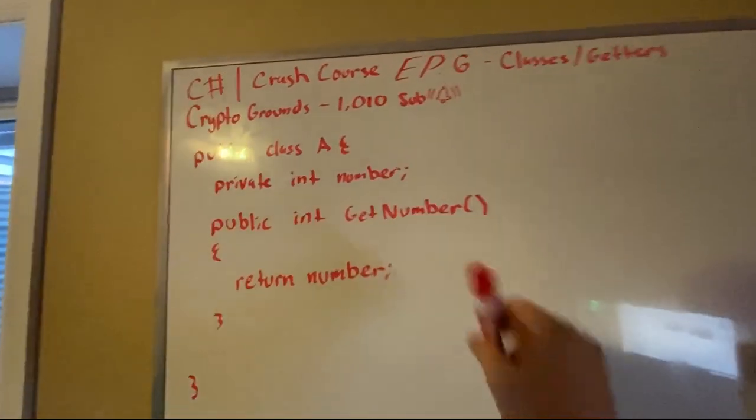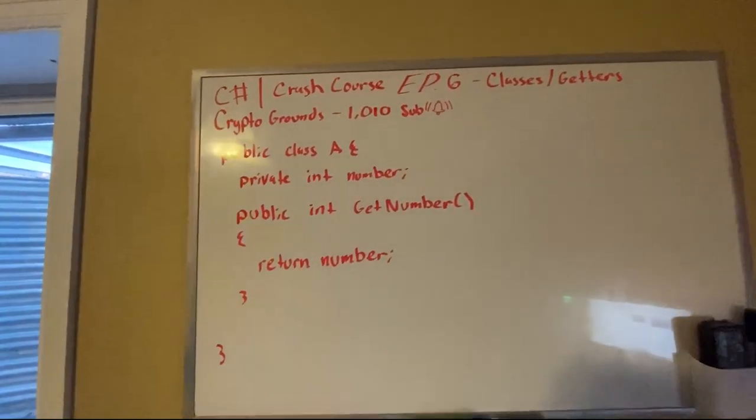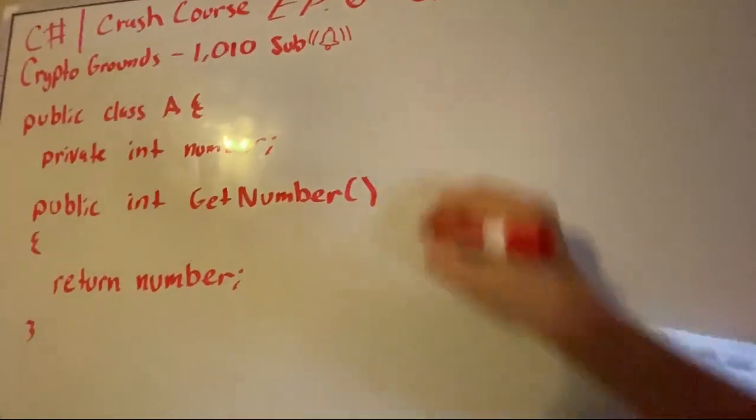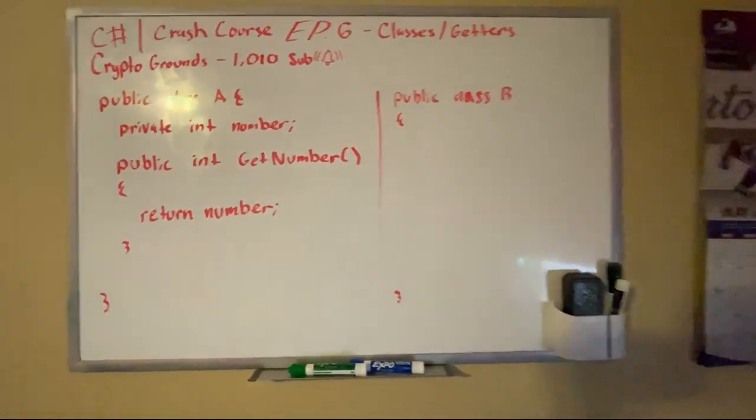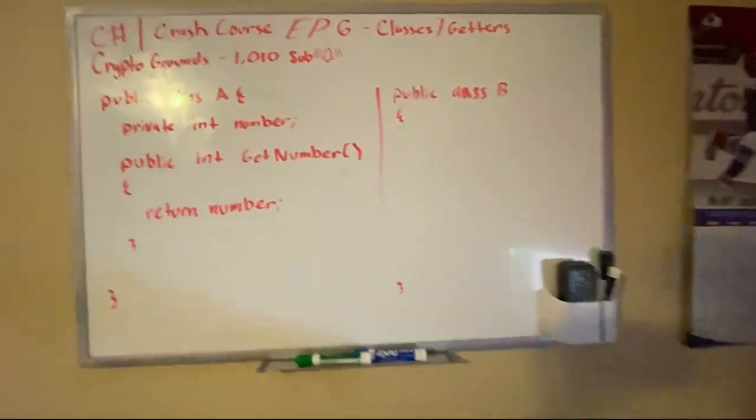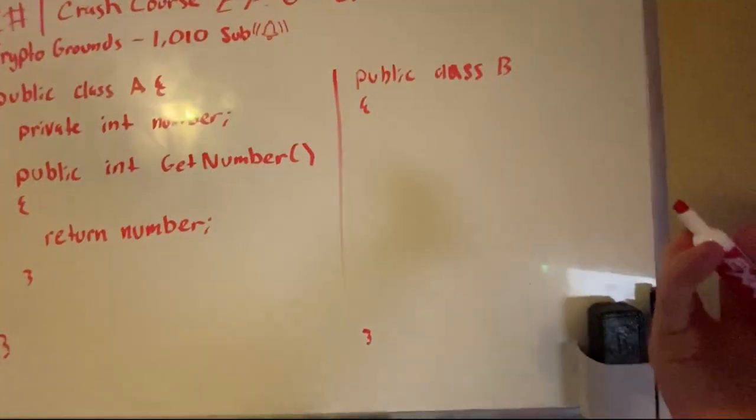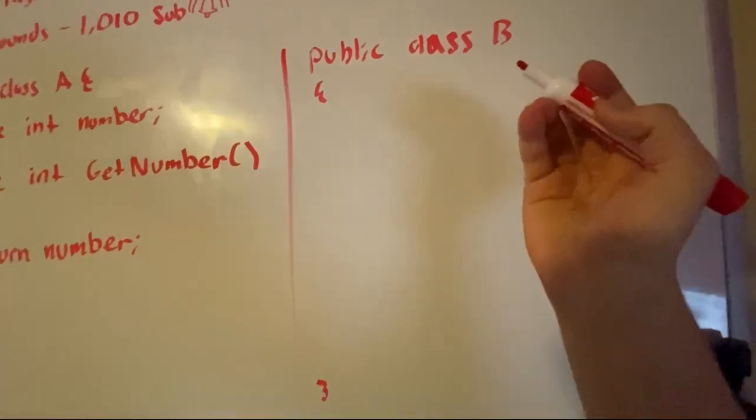So we do public int GetNumber, and basically what we can do here is return number. There we go. Now this can be used in any class. Sorry, my brother came in again. So let's say we have public class B. We want to not declare A, so I mean what we could do in here, I'll show you the first way.